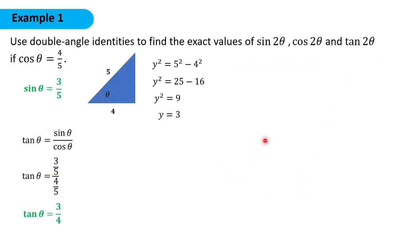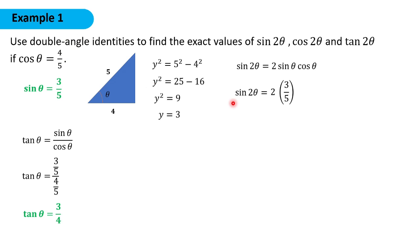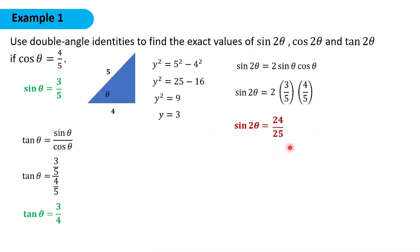To solve for sine 2θ, we can use 2 sine θ times cosine θ. So we have 2 times 3/5 for sine θ, and cosine θ is 4/5. Simplifying, we have 2 times 3 times 4 is 24, over 5 times 5 is 25. So sine 2θ is equal to 24 over 25.